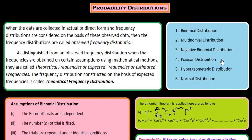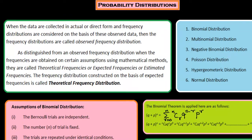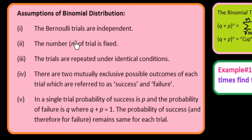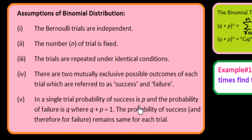Now I would like to explain the assumptions for binomial distribution. The Bernoulli trials are independent — it should be an independent trial and the number N should be fixed. The trials are repeated under identical conditions. There are two mutually exclusive possible outcomes of each trial, referred to as success or failure. In a single trial, the probability of success is P and the probability of failure is Q, where Q plus P equals 1. The probability of success and therefore failure remains the same for each trial.